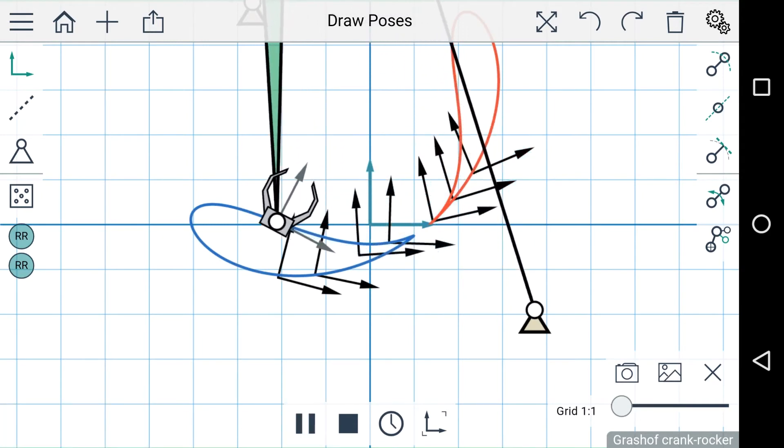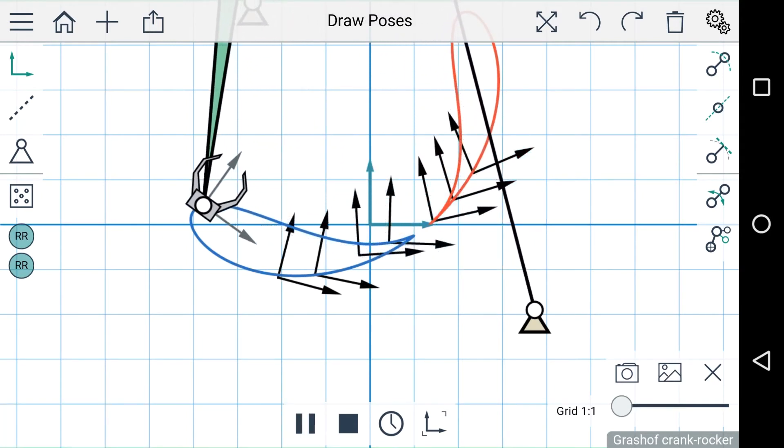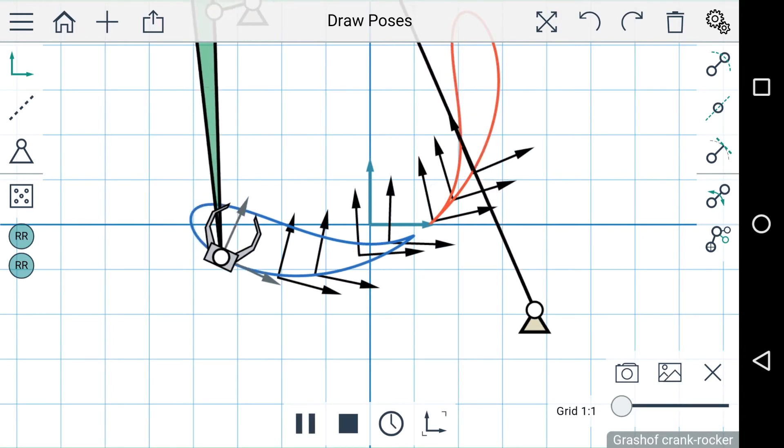So now that we've seen how to synthesize a mechanism using five or more pose constraints, what can we do with fewer than five pose constraints?